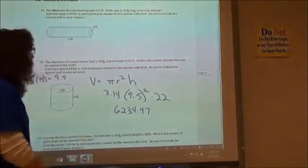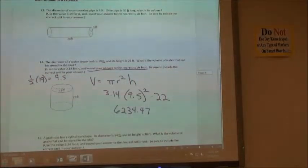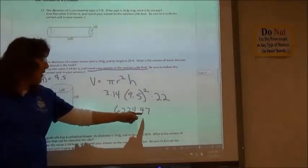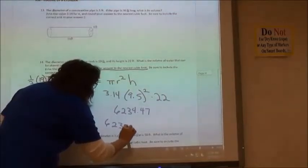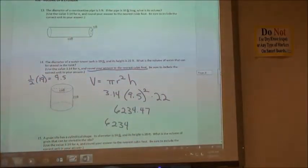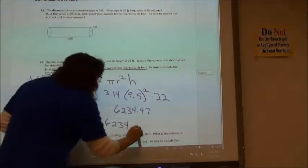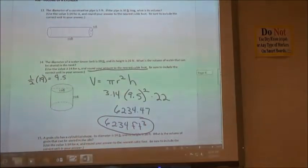And this one says, round your answer to the nearest cubic foot. In other words, it's telling you to round it off to the nearest whole number. So in this case, since there's a 4 in my tenth spot, I'm just going to leave that front part alone and say 6234. And then of course, I have to put my label, since I'm doing volume, it's going to be feet cubed. Feet to the third power. So 6234 feet cubed.